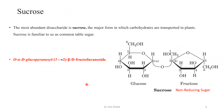Now for another example — sucrose. Sucrose is the most abundant disaccharide, widely available from plant sources and fruits. We are familiar with it as common table sugar used in daily life. Sucrose is a combination of glucose and fructose. Fructose forms a furanose ring — a five-membered ring structure — so it is named furanose, while glucose is in a six-membered ring, named pyranose.